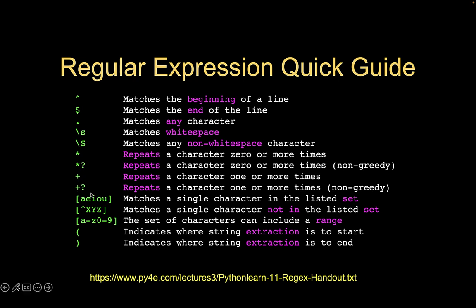Square brackets allow us to create a set of characters, such as lowercase a, e, i, o, u. It's going to match a single character that is one of those. If we wanted to match a series of those, we'd combine the set with an asterisk or plus. If we have a circumflex inside the square brackets, it means 'match anything that's NOT' the listed characters — for example, not capital X, Y, or Z.